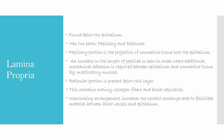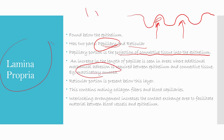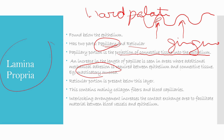Found below the epithelium is the lamina propria, in the connective tissue. The lamina propria has two parts: papillary and reticular. The papillary portion consists of projections of connective tissue into the epithelium. An increase in the length of the papillaries is seen in areas where additional mechanical attachment is required between epithelium and connective tissue, like masticatory mucosa — found in the hard palate and gingiva.